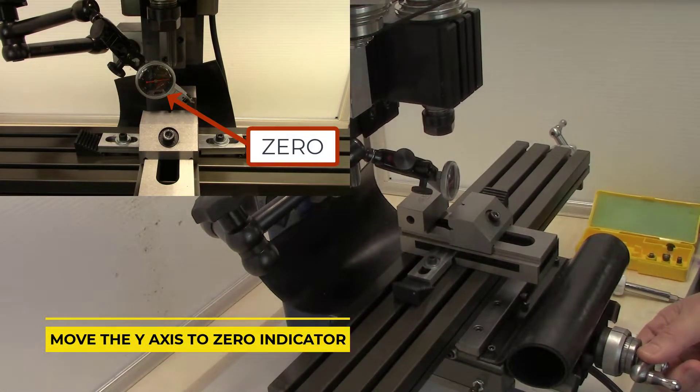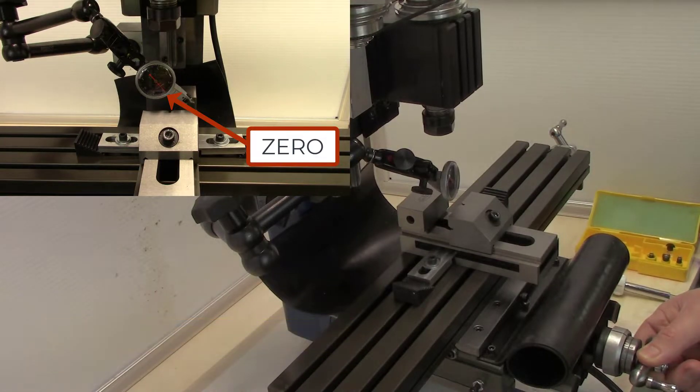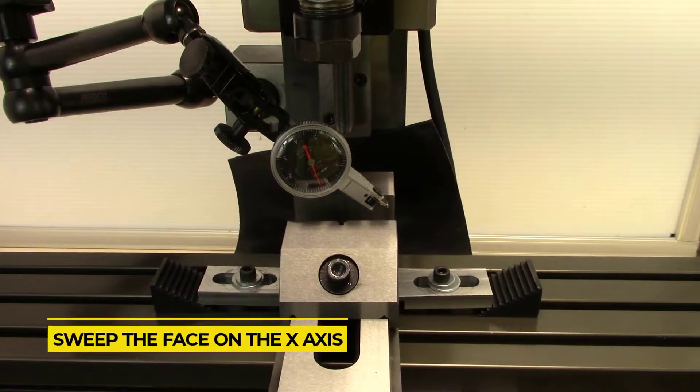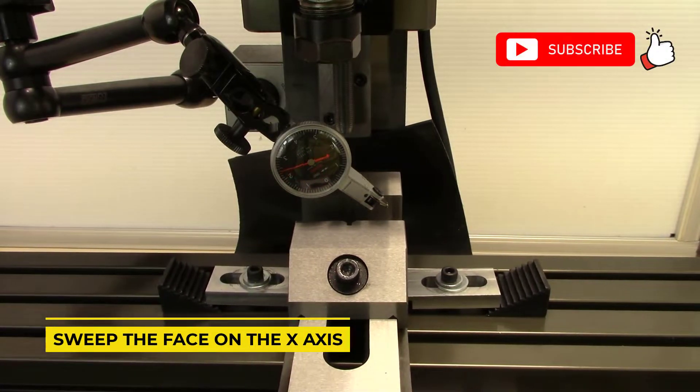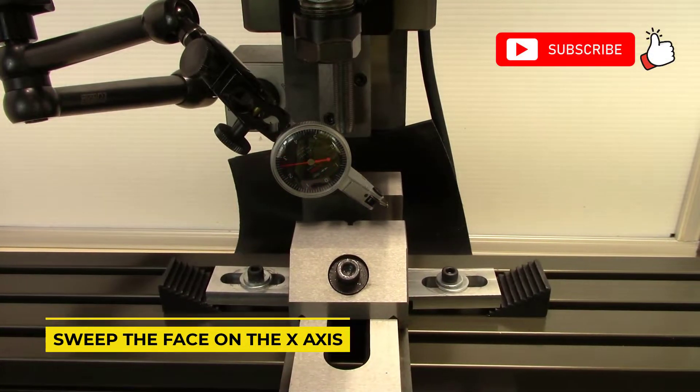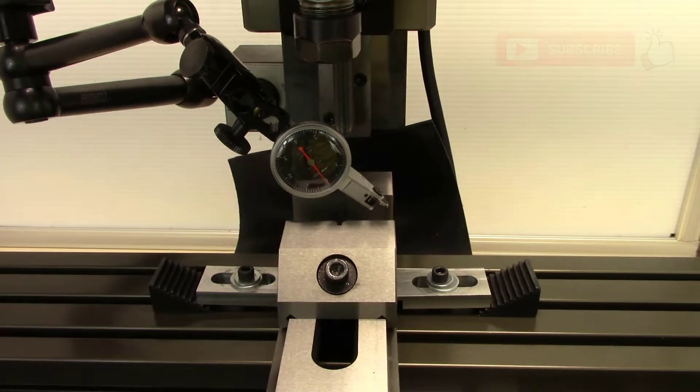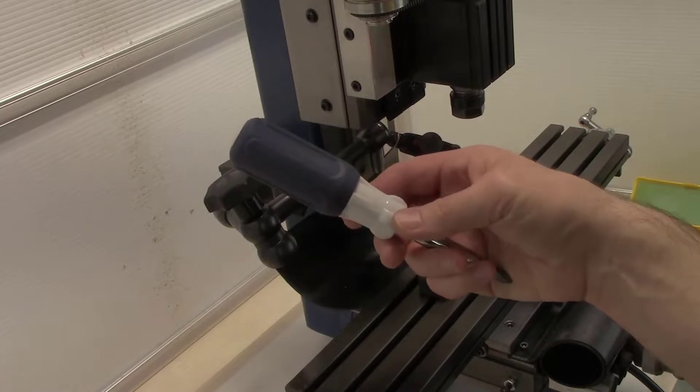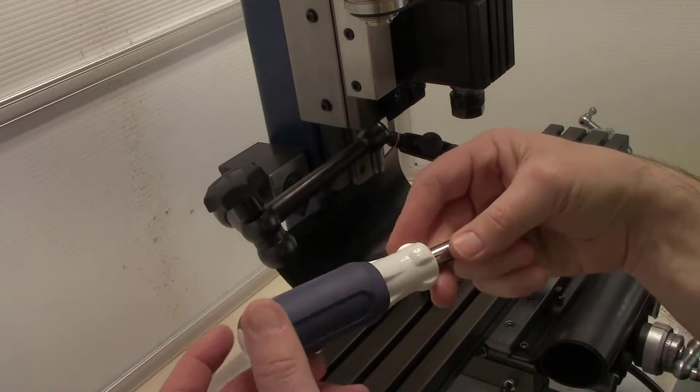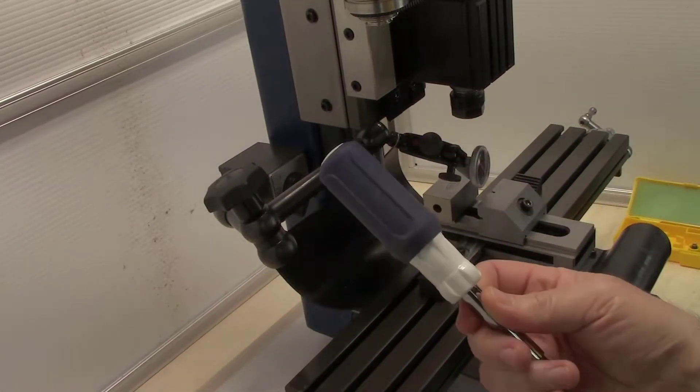Here we'll zero out our indicator using our y-axis. We'll go ahead and sweep the face with the x-axis. We're pretty far out so we'll need to make an adjustment. I like to use the soft handle of a screwdriver to tap on the vise.